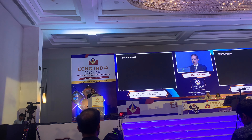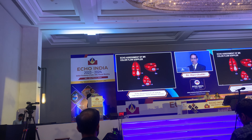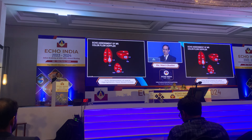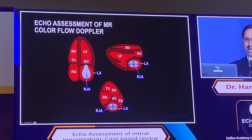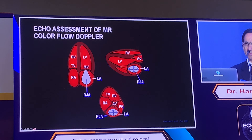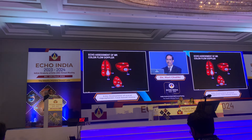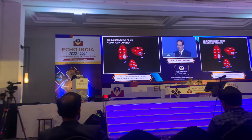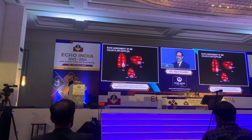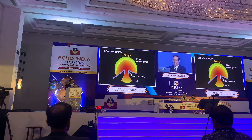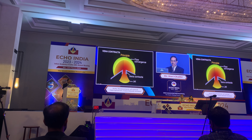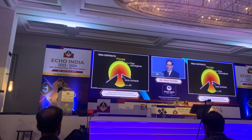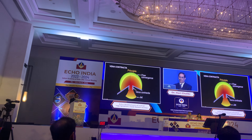Traditionally we have relied on color flow imaging, but it has many pitfalls. This mostly involves looking at the color jet area in the left atrium in proportion to left atrial area. There are quantitative methods and we must move more towards quantitative techniques rather than relying on color flow estimation of mitral regurgitation.